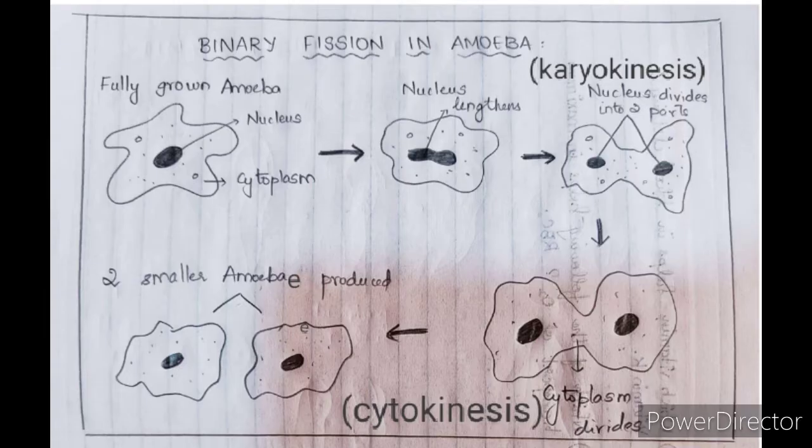First, the parent amoeba matures — consisting of a nucleus, cytoplasm, and other cell organelles — and undergoes binary fission. The nucleus starts to elongate, leading to splitting or division of the nucleus. 'Karyo' means nucleus, 'kinesis' means division, so the splitting or division of the nucleus is termed karyokinesis.